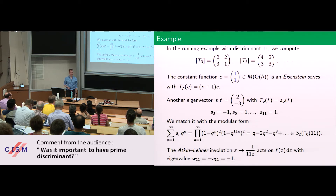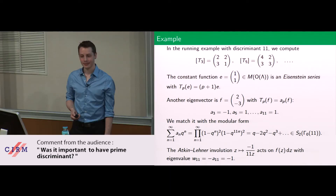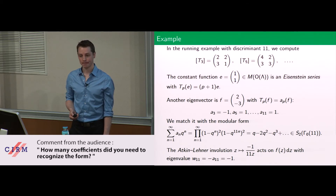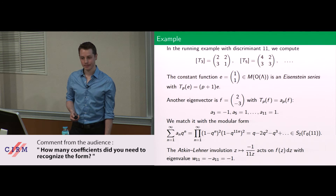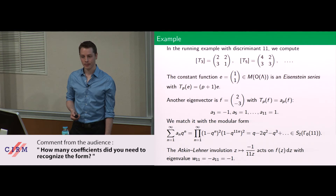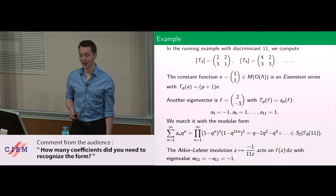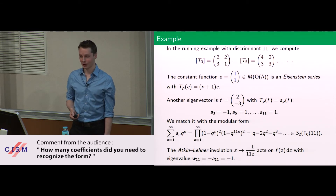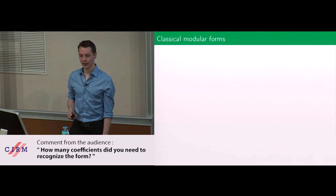Two questions: was it important to have prime discriminant? No, it was not important to have prime discriminant. Two, how many of these coefficients did you need to get the modular form? I have a theorem, so I knew in advance what I was going to get. I didn't actually have to compute this — I just wanted you to see what it looks like. So you're ready for the theorem then?